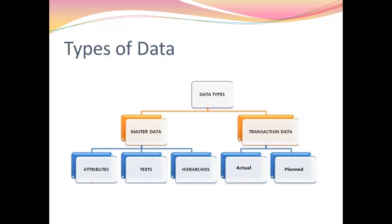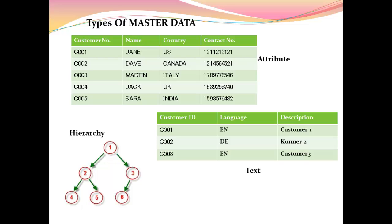Let's take an example of each of them to get a better understanding. This table is an attribute type of master data wherein the customer number C001 is the characteristic type info object. Here customer C001 holds the attribute like name, country, and contact number. For C002 it would bring up Dave, Canada, and its contact number.